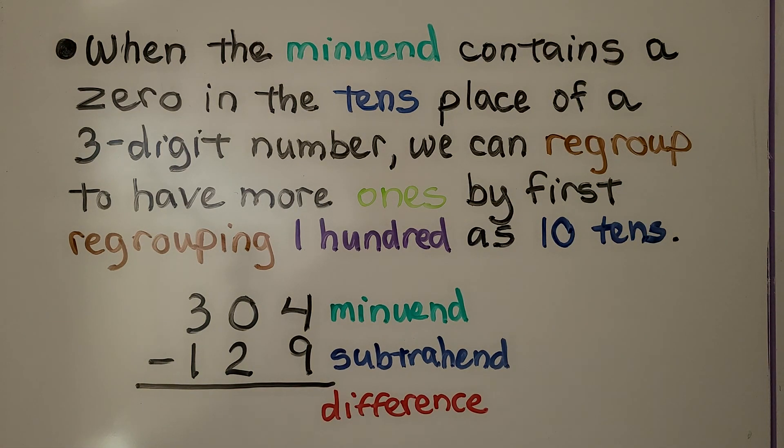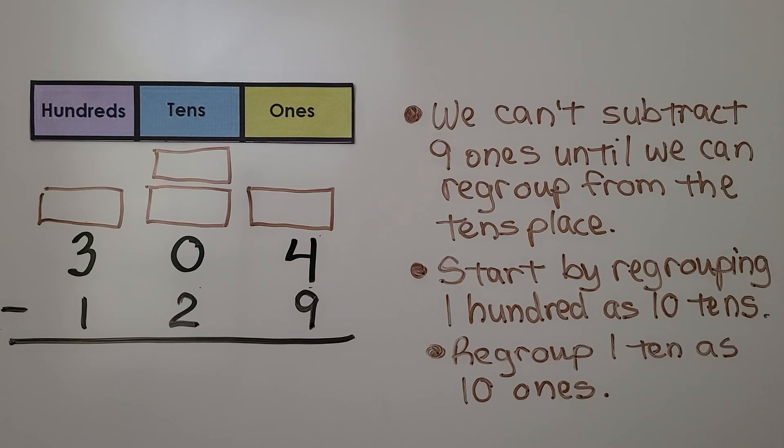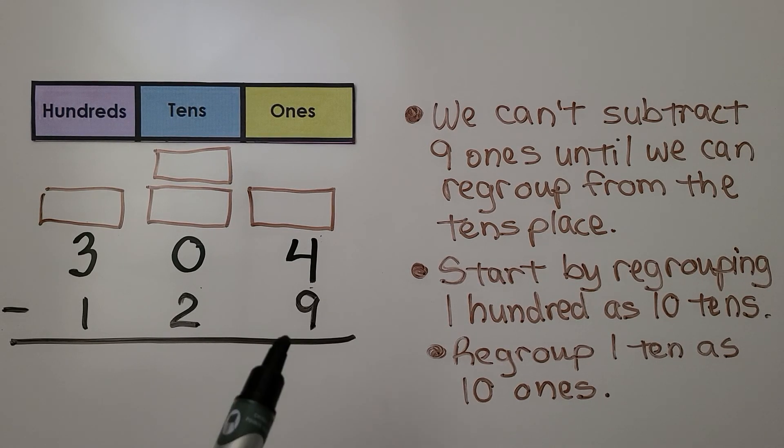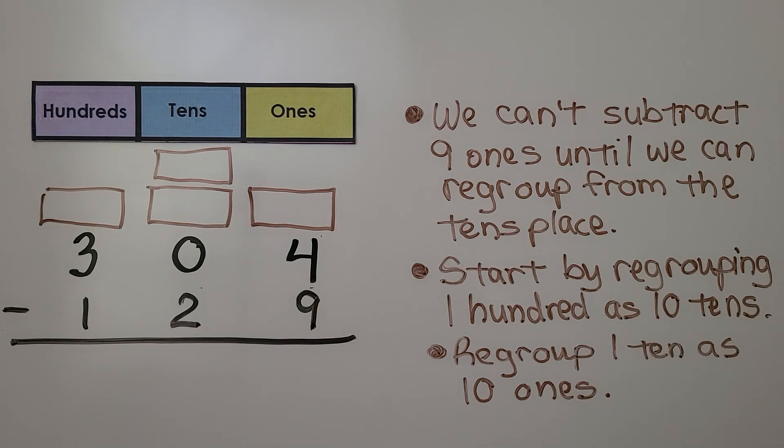Let's see how to solve this problem. We have 304 minus 129. We start with the ones place. We have four ones, and we need to take nine away, but we can't subtract nine ones until we can regroup from the tens place.